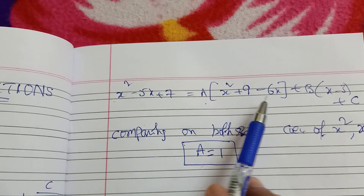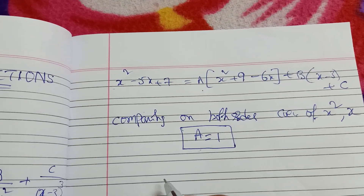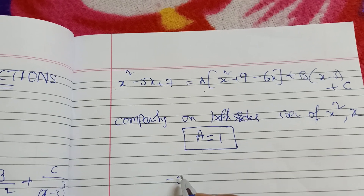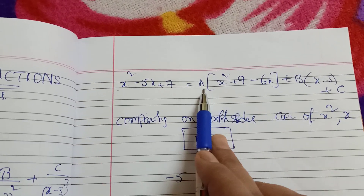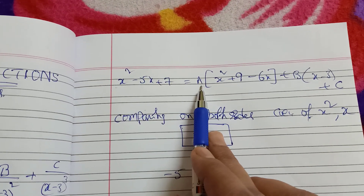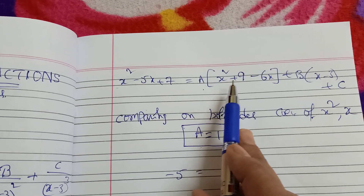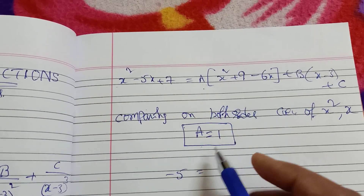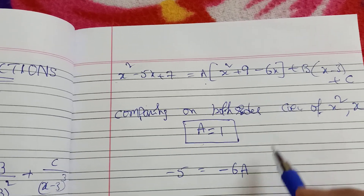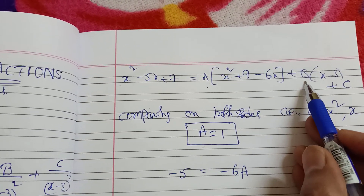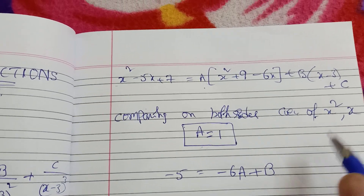Now we compare x coefficients. The x coefficient on the left is minus 5. On the right, it is minus 6A plus B. So: minus 5 equals minus 6 into 1 plus B.